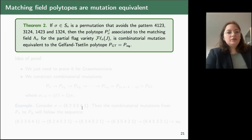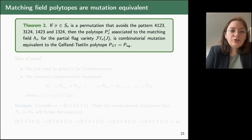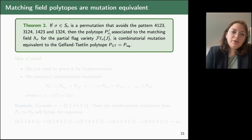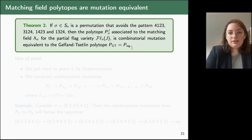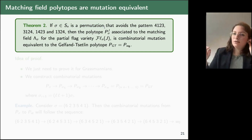We can now characterize which of these polytopes are combinatorial mutation equivalent to the Gelfand-Zetlin polytope. If a permutation σ avoids the patterns 4123, 3124, 1423, and 1324, then the polytope P_σ associated to the matching field defined by σ is combinatorial mutation equivalent to the Gelfand-Zetlin polytope. Pattern avoidance means there is no subset of indices exhibiting those patterns.